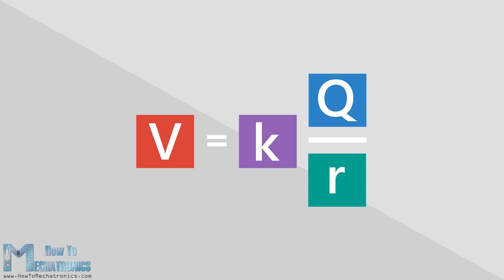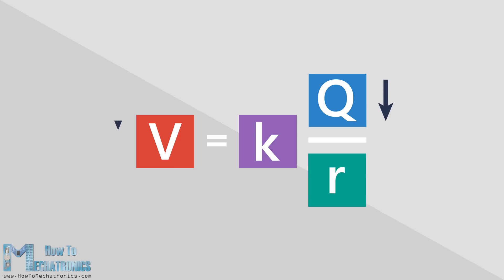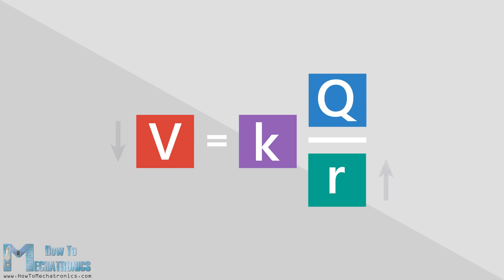The equation shows us that the potential is directly proportional to the amount of charge. As the charge increases, the potential increases. As the charge decreases, the potential decreases. On the other side, it is inversely proportional to the distance R, because as you move away from the charge the potential is going to decrease, and as you move closer to the charge the potential is going to increase.